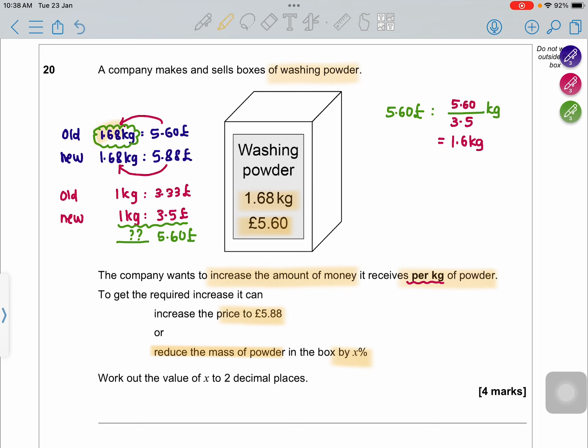See, last time how much did you pay? You paid 1.68 kg for £5.60. But now you are paying the same amount, which is £5.60, but there is a reduction in the weight. From 1.68 kg it is becoming 1.6 kg.